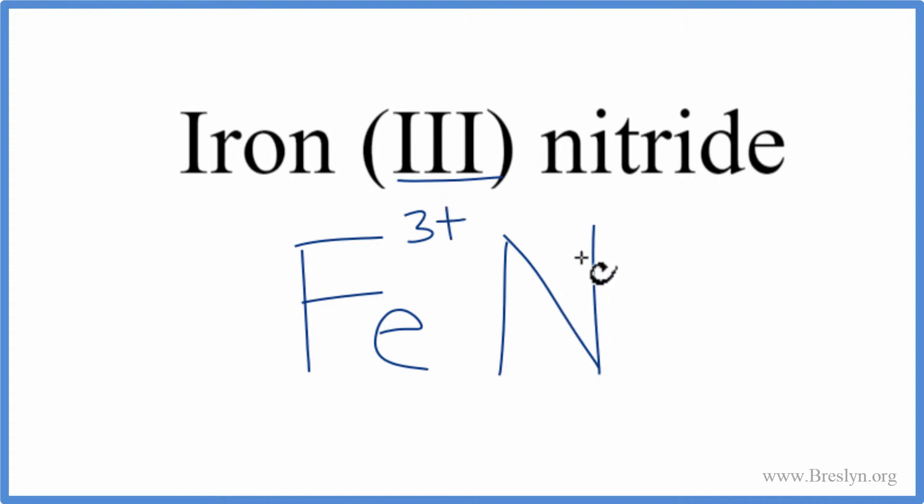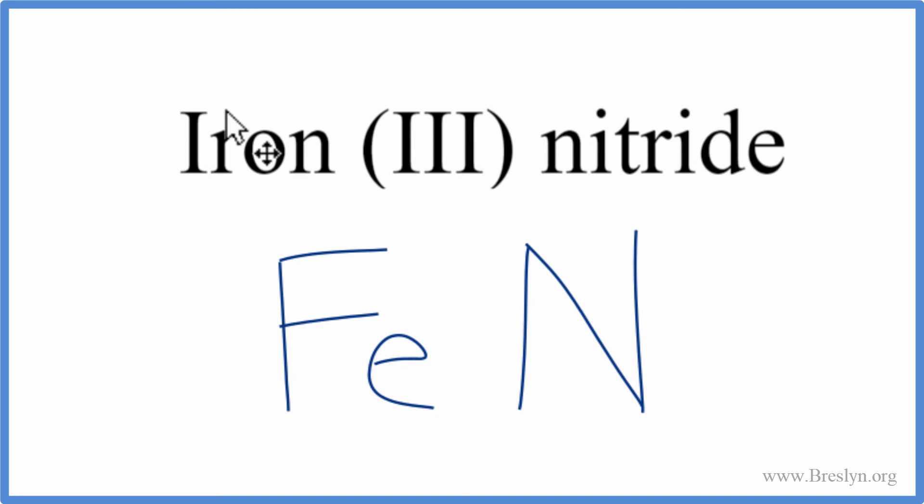The nitride, you look on the periodic table, it's 3-. So since iron (III) nitride is a neutral compound, these should add up to zero, which they do—we have a net charge of zero. This is the formula for iron (III) nitride: FeN. Let's remove the charges and clean it up, and that's the formula for iron (III) nitride.